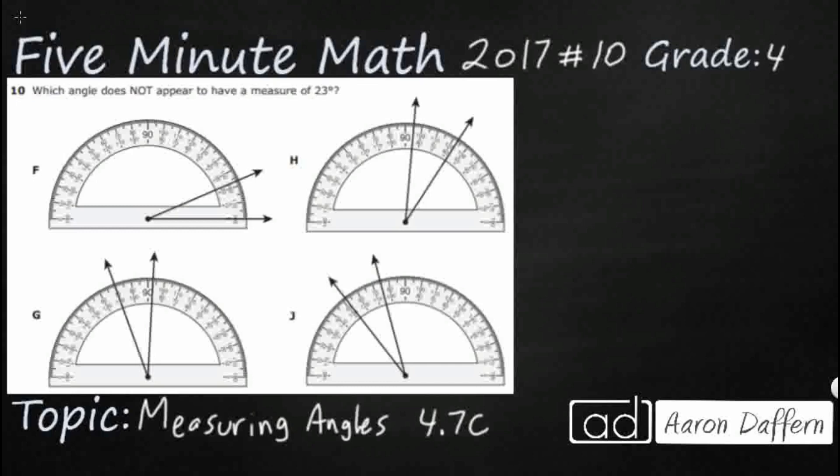So we simply need to find the angle that does not appear to have a measure of 23 degrees. Let's make sure we understand our three types of angles. We've got acute angles, right angles, and obtuse angles. Well, first let's start with our right angles - they're 90 degrees, they're square corners right there.